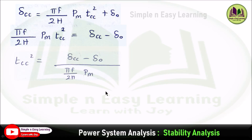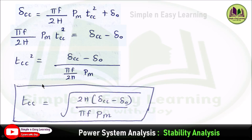Therefore, t_cc equals the square root of 2h times (delta_cc minus delta_0) divided by pi f times P_m. This is the critical clearing time formula for a single machine infinite bus system.